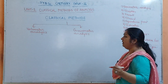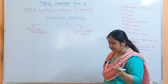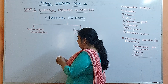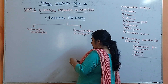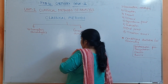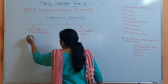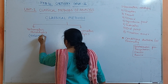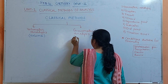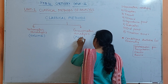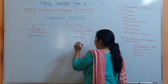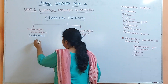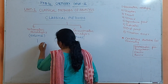In Volumetric Analysis, as the name indicates, the quantity measured is Volume. In Gravimetric Analysis, the quantity measured is Mass. Volumetric Methods are further classified into two: Volumetric and Titrimetry.